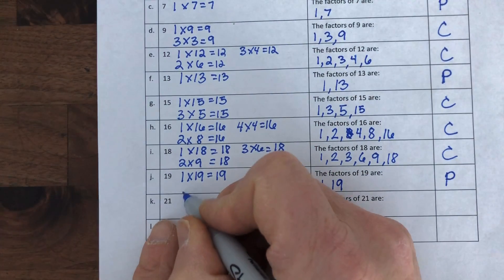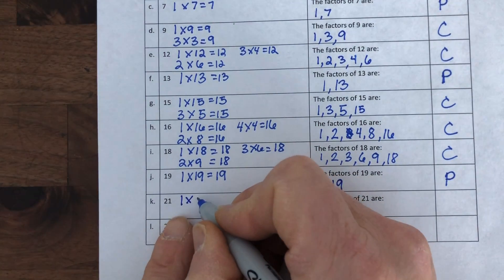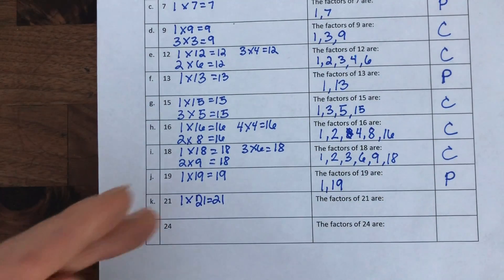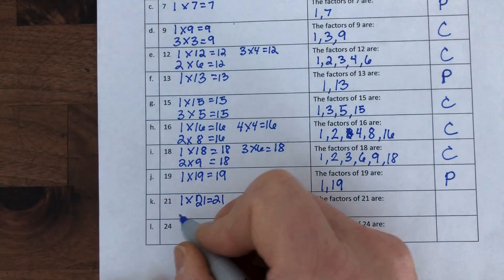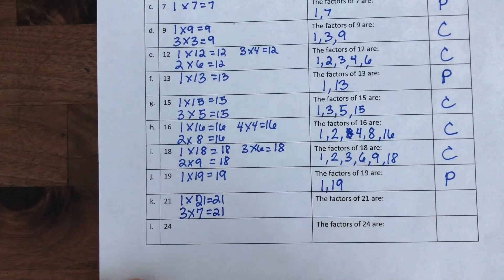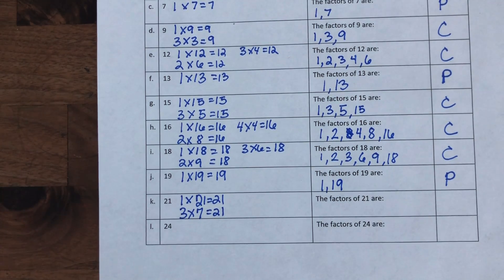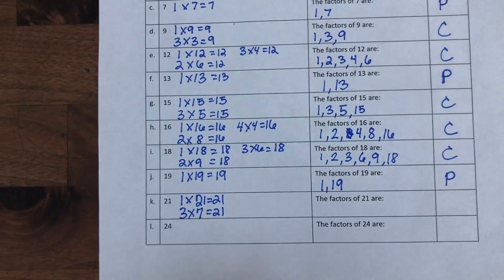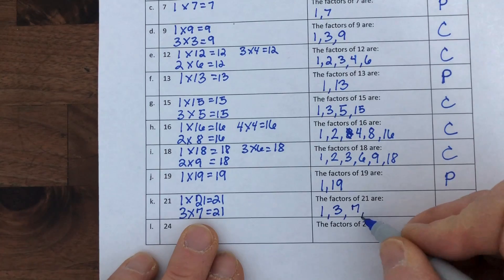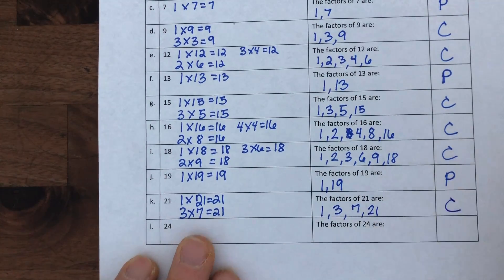Number 21. This one sticks out to me. One times 21 is 21. Two won't fit because it's odd, but three does — three times seven equals 21. Nine would go right past it, and eight doesn't fit because it's even. So my factors are one, three, seven, and 21, making it a composite number.